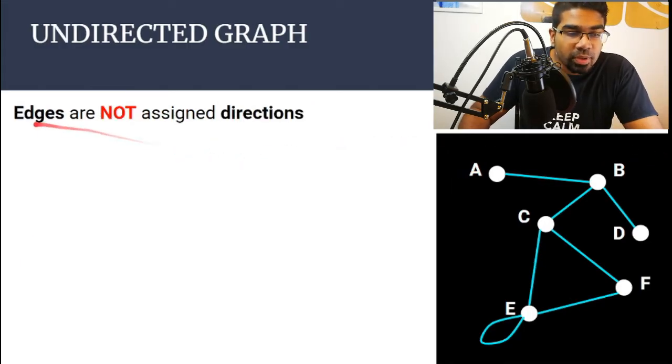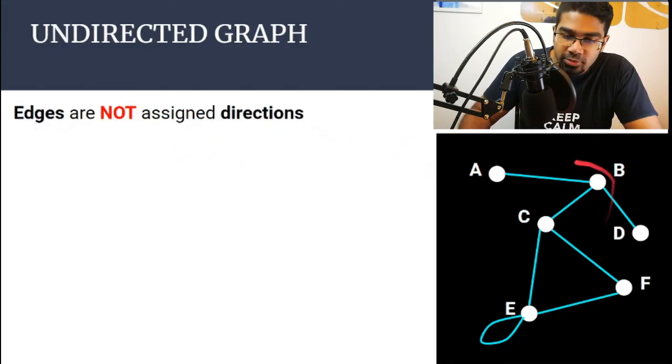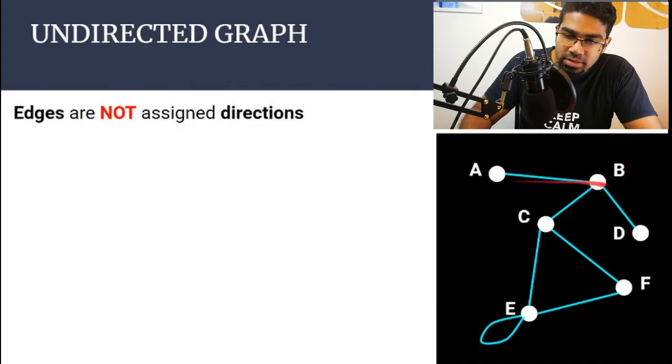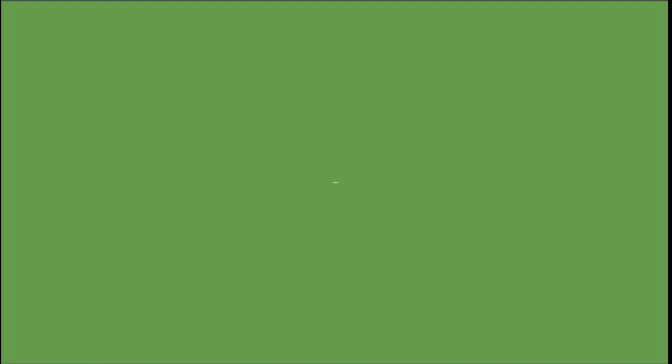An undirected graph is when the edges are not assigned any directions — there are just edges with no direction.